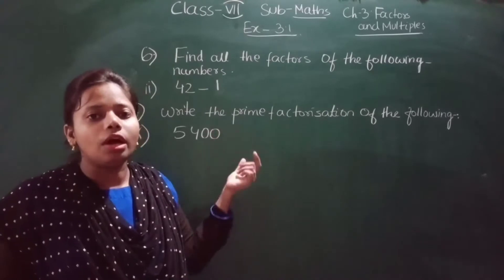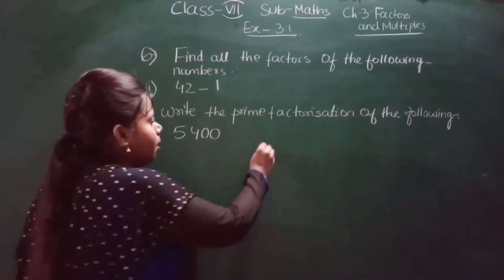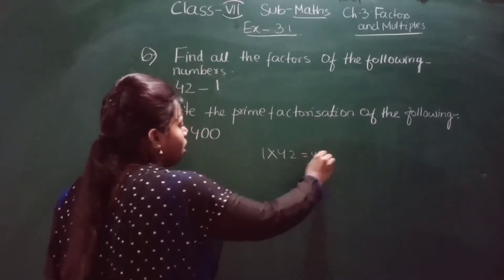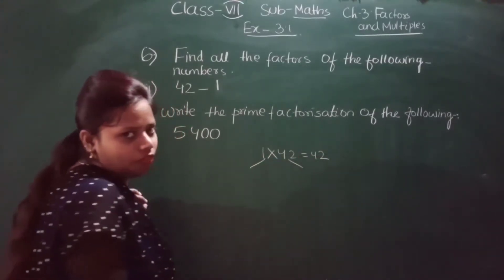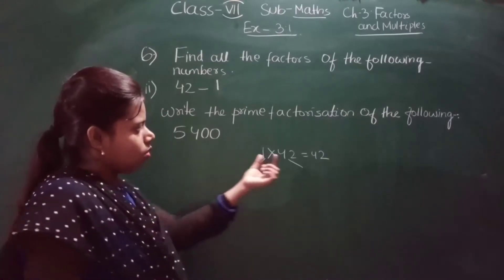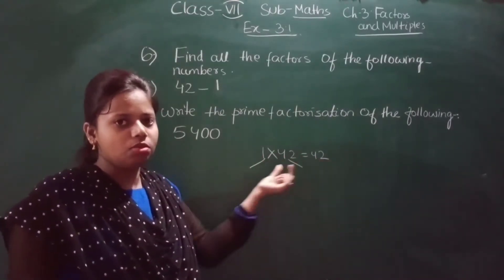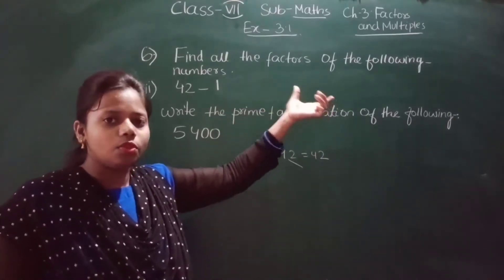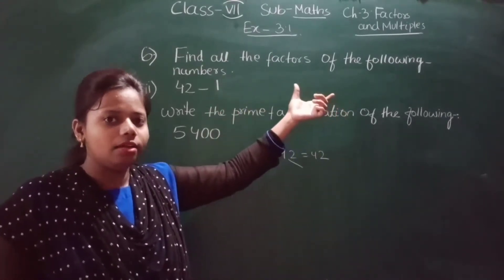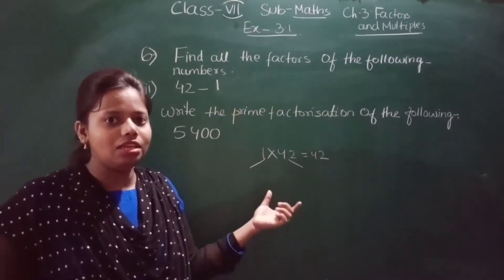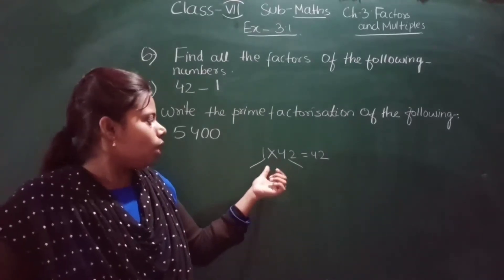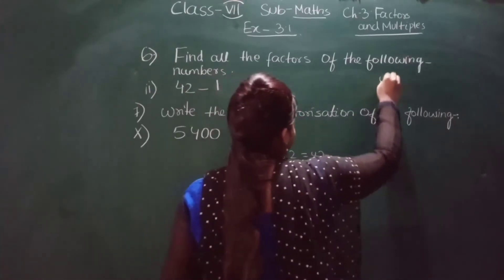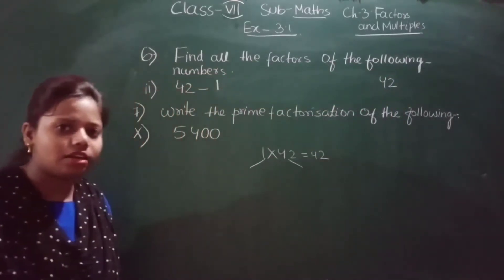We start from 1, because 1 is a factor of every number. So 1 multiplied by 42 gives 42, which means both 1 and 42 are factors of 42. We can work from both sides — writing 1 on the left and 42 on the right — because the number itself is always a factor.